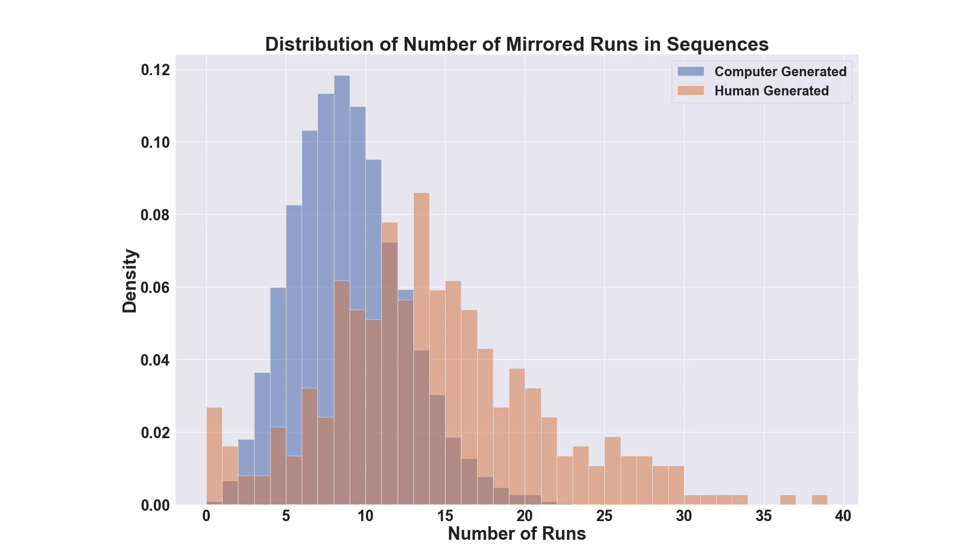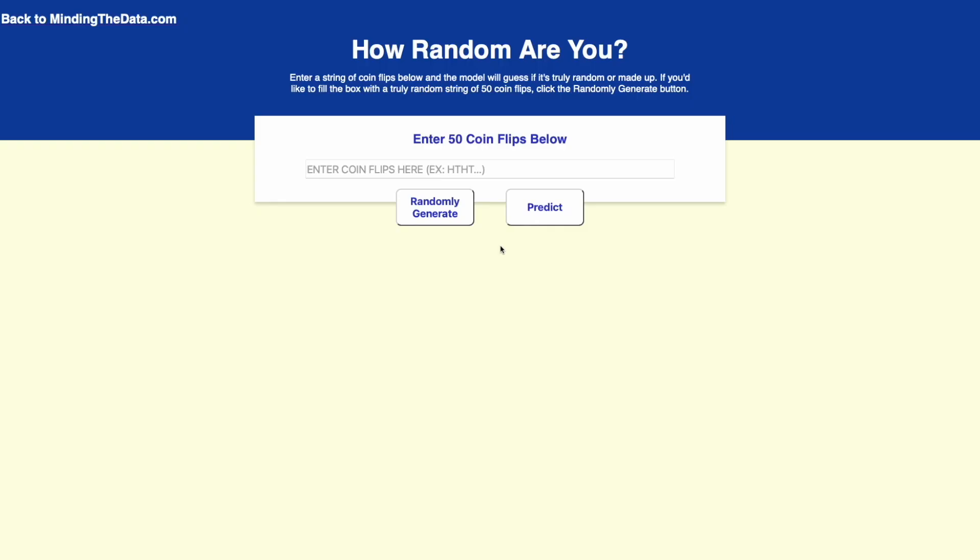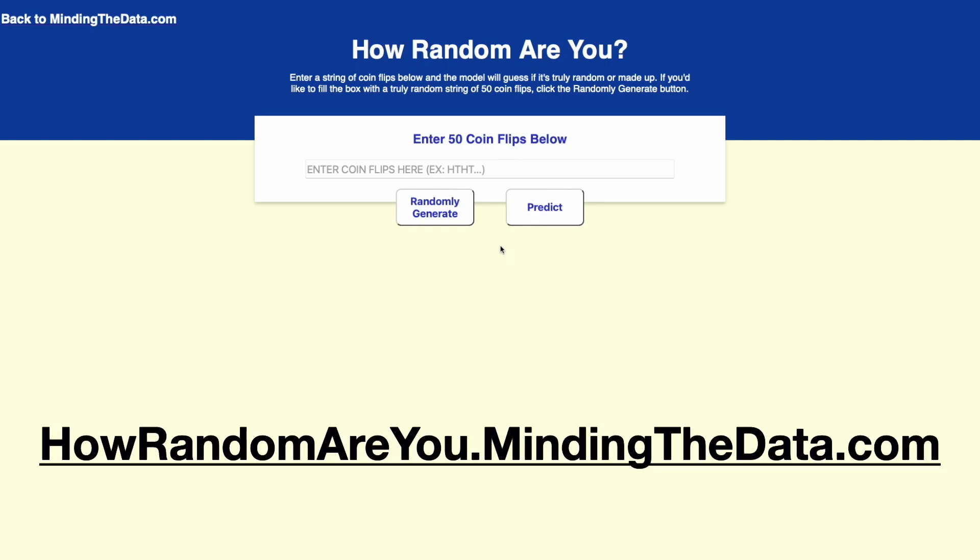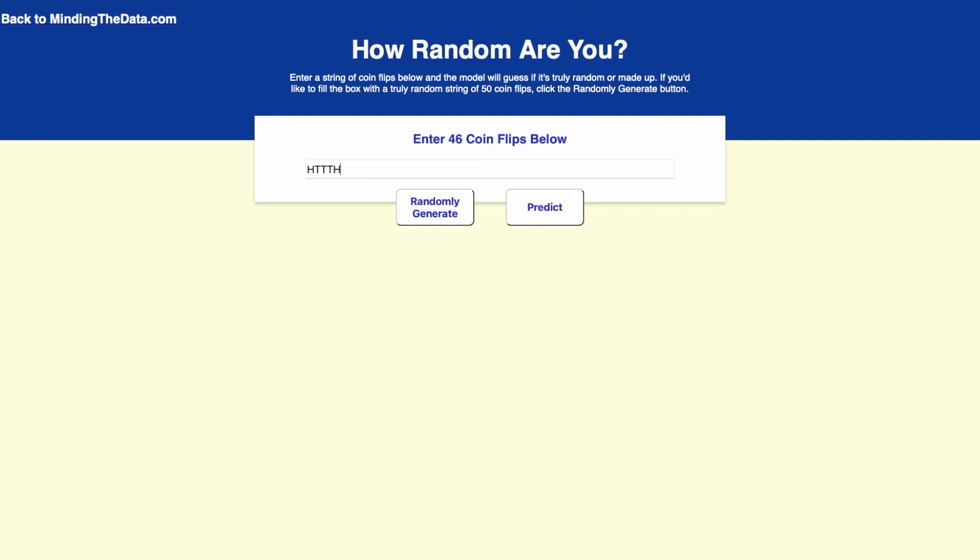I didn't want to just show off this experiment without letting you guys try it out for yourselves, so I created a web application where you can see if you can fool the same model that was built in this video. You can try it out for yourself at howrandomareyou.mindingthedata.com, which I'll leave a link to in the description. On the site, you'll have the option to either type in your own sequence of coin flips, or you can click this button here to have a random sequence generated for you.